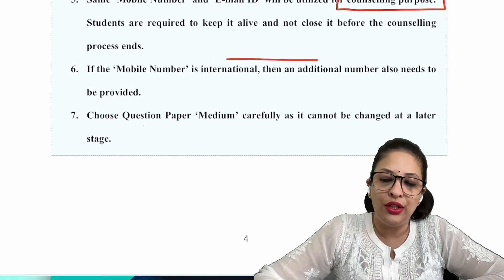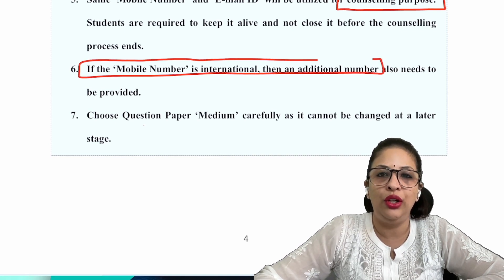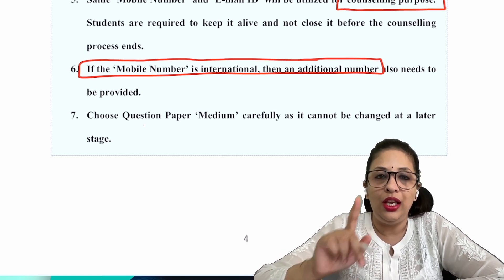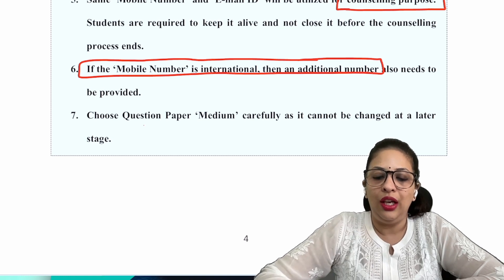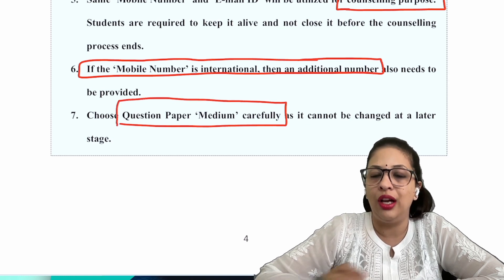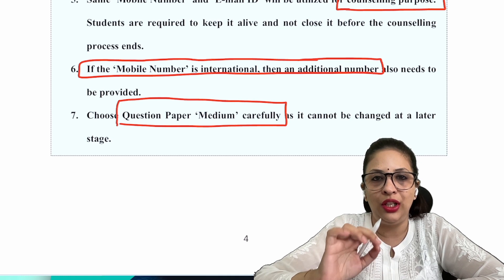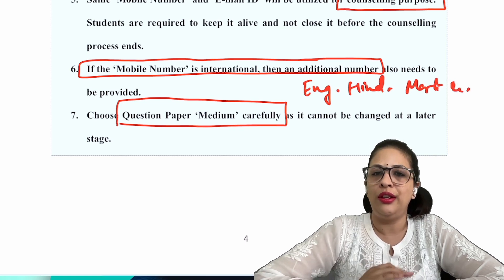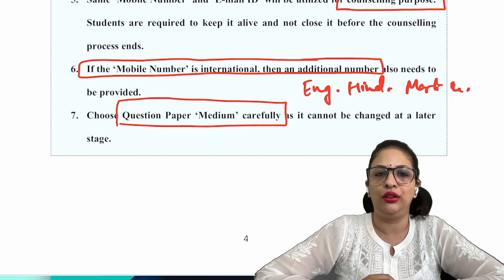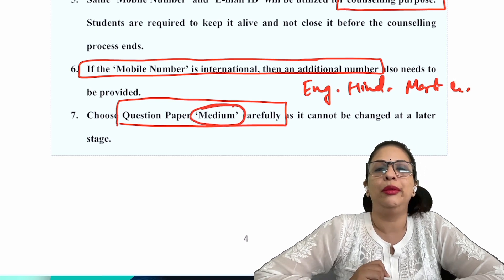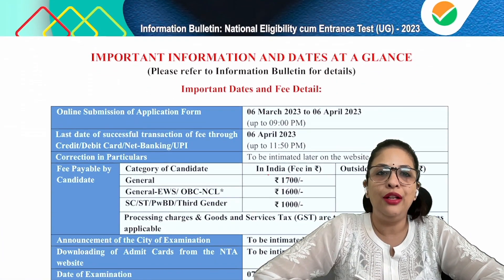You will need to provide an additional number as well — this is for children who are outside India and filling the form for the exam. One last very important thing: whatever medium you have chosen for your question paper, once chosen, you cannot change it at any stage later. You can choose English medium, Hindi medium, Marathi medium, Rajasthani, Gujarati, and many other languages, depending on which language you have studied in. You must choose this medium very carefully and thoughtfully.